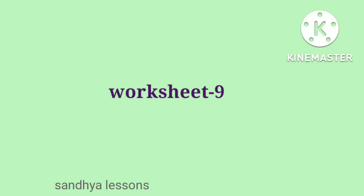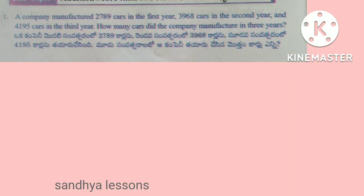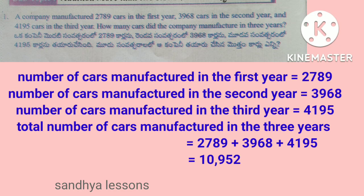Worksheet 9, Problem 1: A company manufactured 2,789 cars in the first year, 3,968 cars in the second year and 4,195 cars in the third year. How many cars did the company manufacture in 3 years?